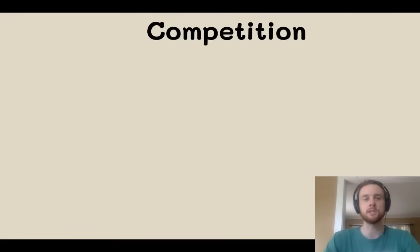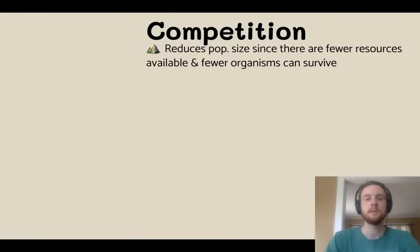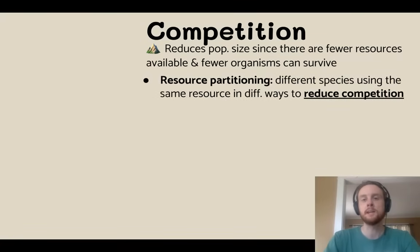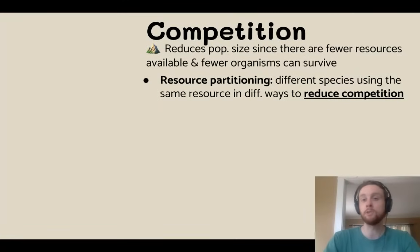And then finally we have competition. Remember that it's going to be a lose-lose situation — both competing species will have fewer organisms survive and smaller populations as a result. However, something called resource partitioning, or resource sharing, can allow different species to utilize the same resource in slightly different ways, and that reduces competition. The species don't strategize about this; it's just that evolution favors traits that allow them to utilize the same resource in a slightly different way.